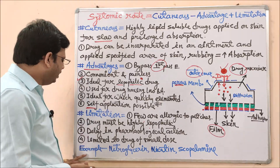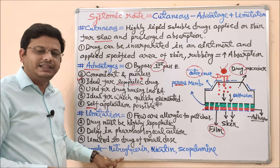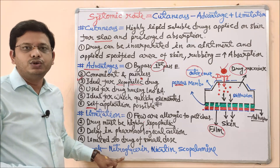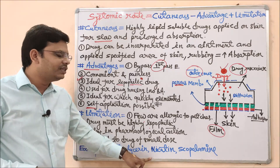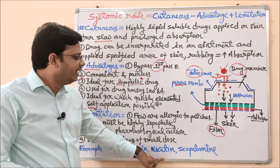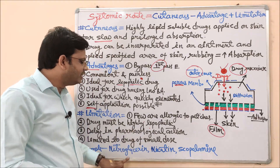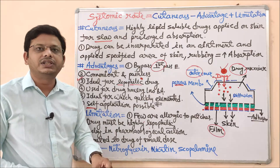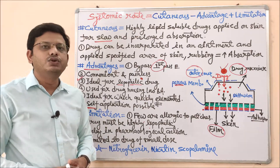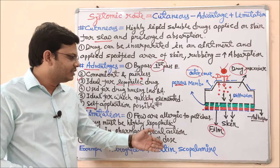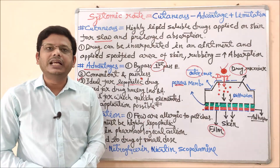Examples of drugs used in transdermal patches include nitroglycerin or trinitroglycerin, used for angina; nicotine, used to reduce smoking addiction; and scopolamine, used for other therapeutic purposes.